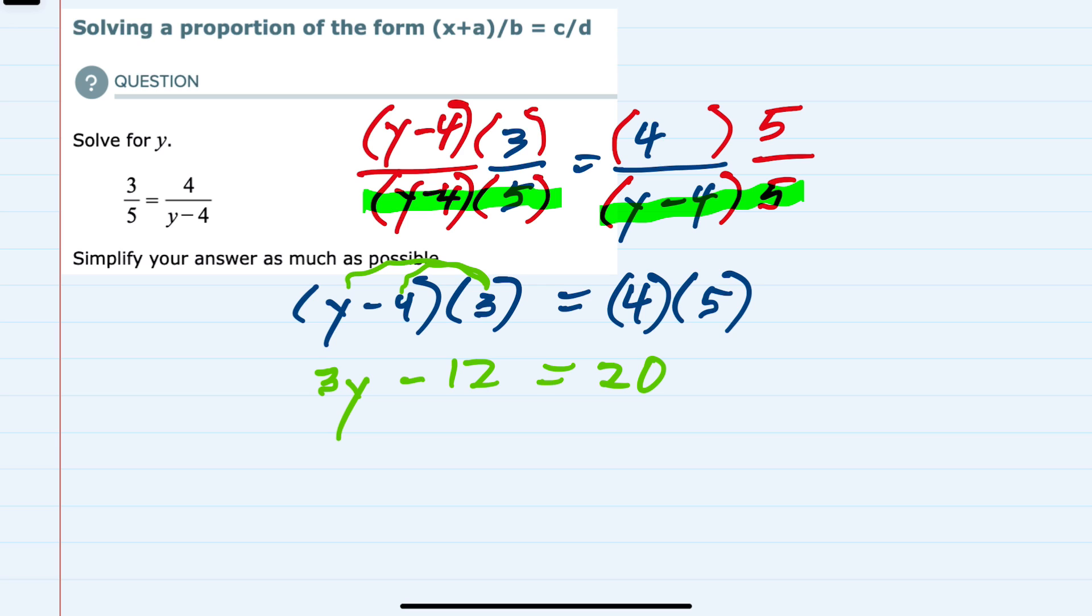I just need to isolate the y, and I can do that by first adding the 12 over to the other side. That cancels, leaving me with 3y equals 32, and then dividing both sides by 3.